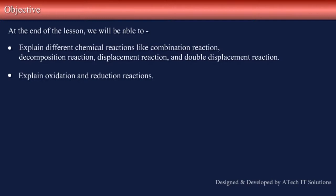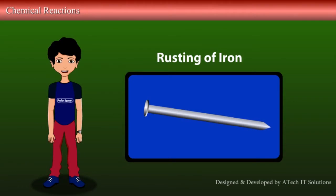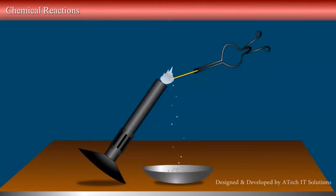Do you observe what happens when an iron nail is exposed to a humid atmosphere? Rust forms on the nail and a brownish scale is visible. This is a permanent change and can be expressed in the form of a reaction which cannot be reversed. Similarly, what happens when magnesium ribbon is burnt in the presence of oxygen?